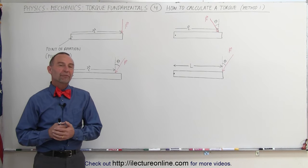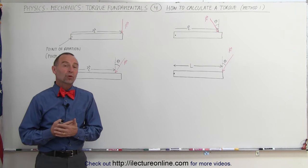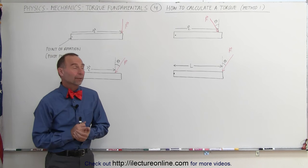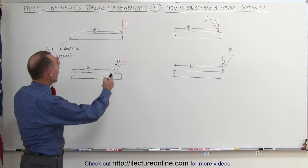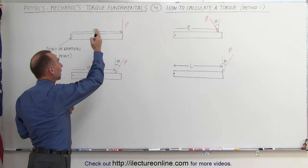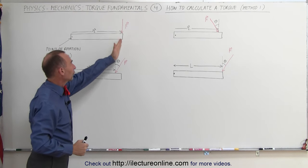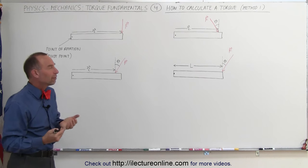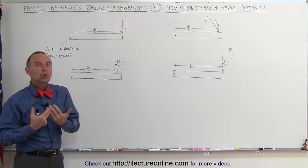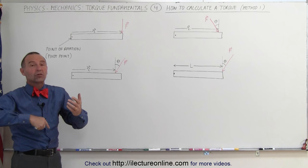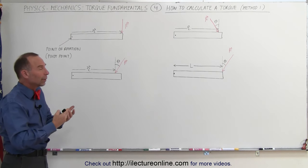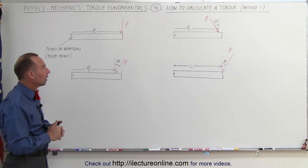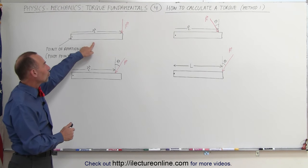Welcome to ILEC Turnline. There are various methods in which we can calculate the torque. Let's start with our first method. If you have a situation where you have an object and you apply a force to it, and the action of the force is not directed through the point of rotation, also called the pivot point, then we're causing a torque, which essentially could cause the object to rotate or accelerate in a rotational sense, if that's the only force acting on it.